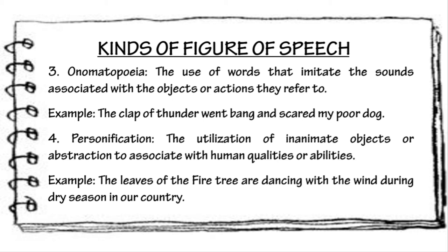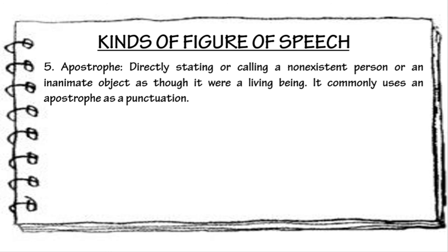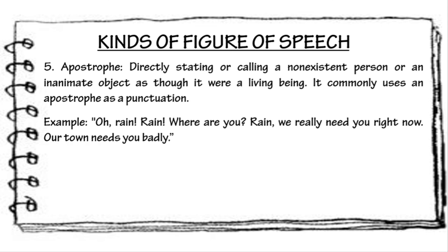Next, we have apostrophe. Apostrophe means directly stating or calling a non-existent person or an inanimate object as though it were a living being. It commonly uses an apostrophe as punctuation. Apostrophe is a figure of speech in which a speaker directly addresses someone or something that is not actually present or cannot respond in reality. Example: 'Oh, rain! Rain! Rain! Where are you? Rain! We really need you right now. Our town needs you badly.' The speaker is talking to the rain as if it is someone with human characteristics.